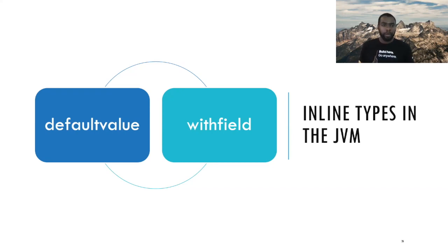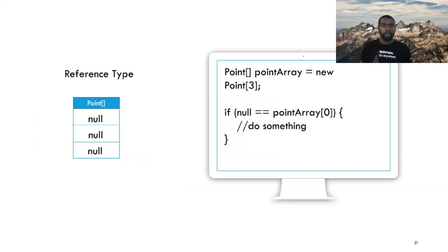The other bytecode is with field. As I said earlier, inline types are immutable, which means you can't change the field. So in order to effectively update an inline type, you have to create a new one with a new value. So with field takes an existing inline type and creates a new one with an updated field.